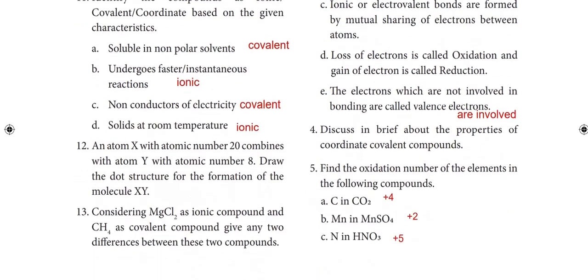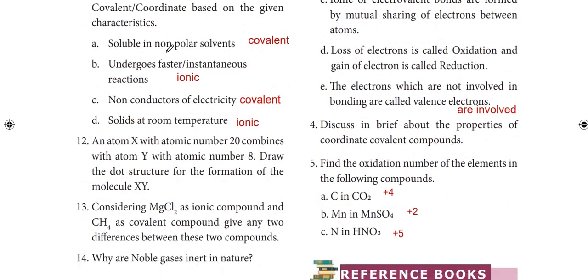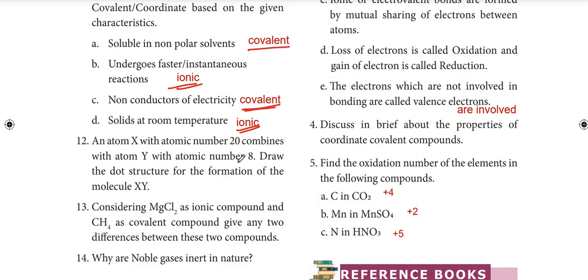Eleventh question: identify the compounds as ionic, covalent, or coordinate based on the given characteristics. Soluble in non-polar solvents — covalent. Undergoes faster or instantaneous reactions — ionic. Non-conductors of electricity — covalent. Solids at room temperature — ionic.